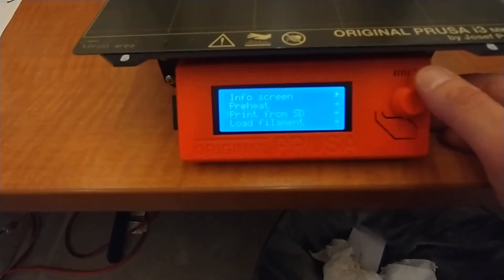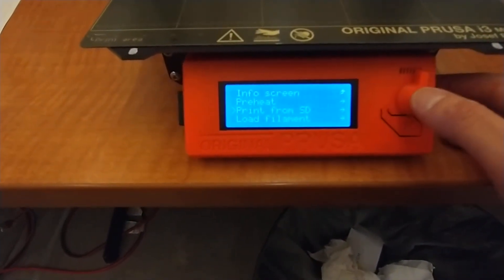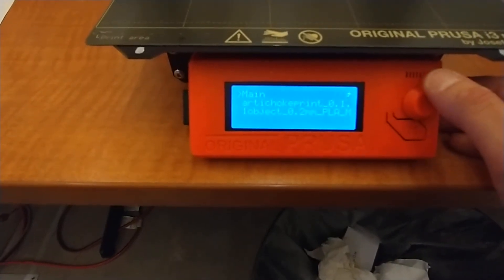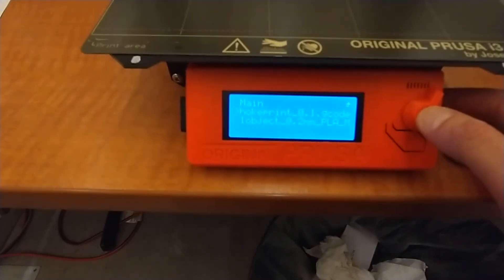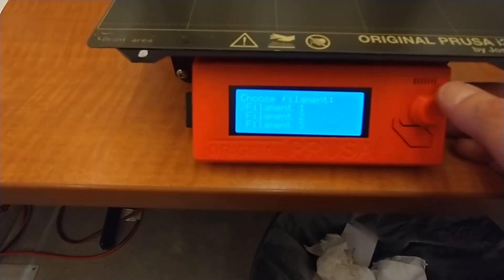If I want to print from the SD, I select that just like normal. And say I select my object, my file that I want to print.